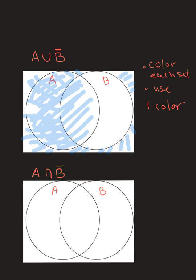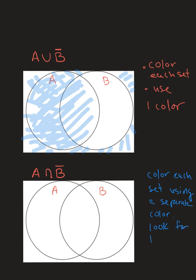What about A intersect B complement? With intersections it's a little more work, because you're looking for what the sets have in common and that can be hard to visualize. What I recommend is that you color each set using a separate color for each, and then look for the overlap. This first step is our work — not the final answer.